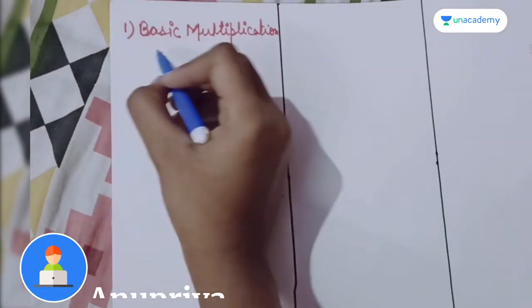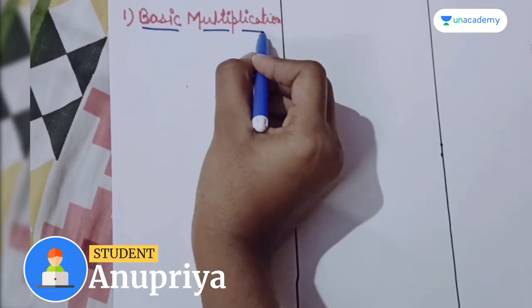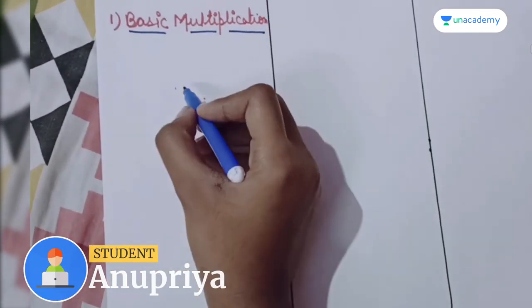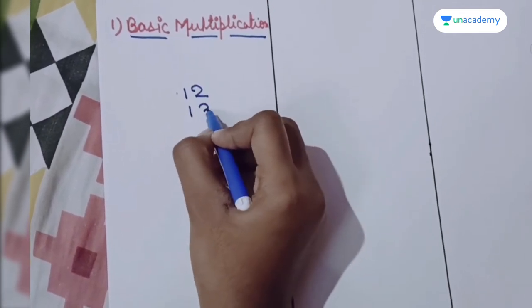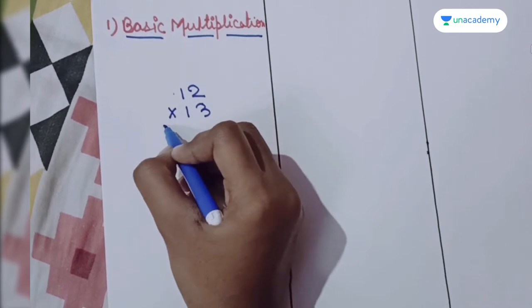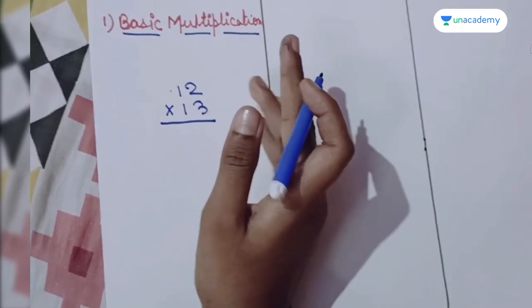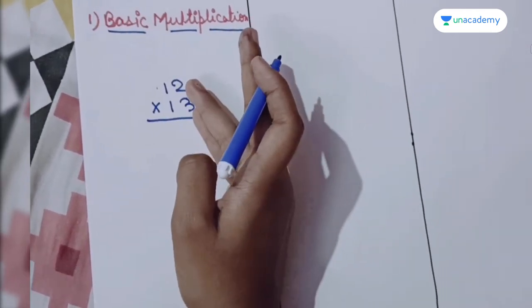My first step is basic multiplication. We are going to take 12 and 13 and multiply it. Generally what we do is multiply 3 into 2, 3 into 1.